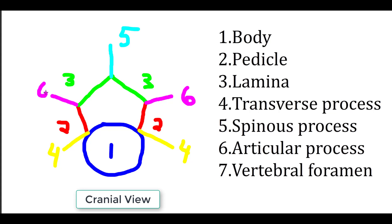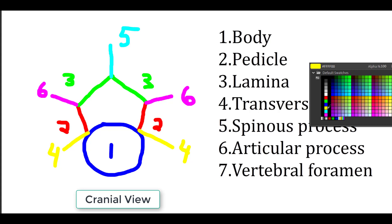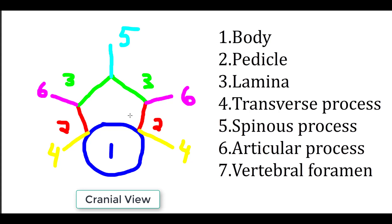The articular process can be cranial or caudal depending on which part of the vertebra you're facing. Considering this the cranial aspect, these would be the cranial articular processes. Finally, the vertebral foramen is the space formed within the arch, and when you put the foramina together, that's where the spinal cord travels — together they form the vertebral canal.